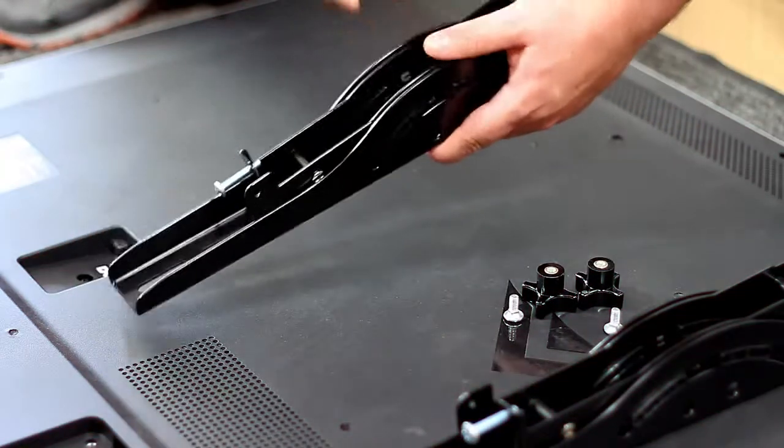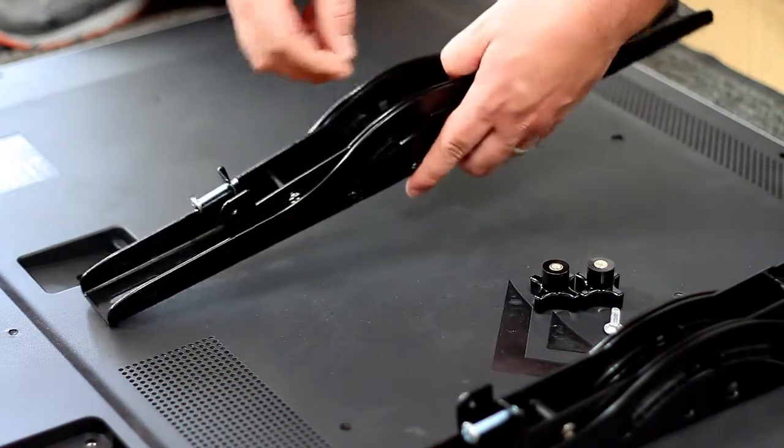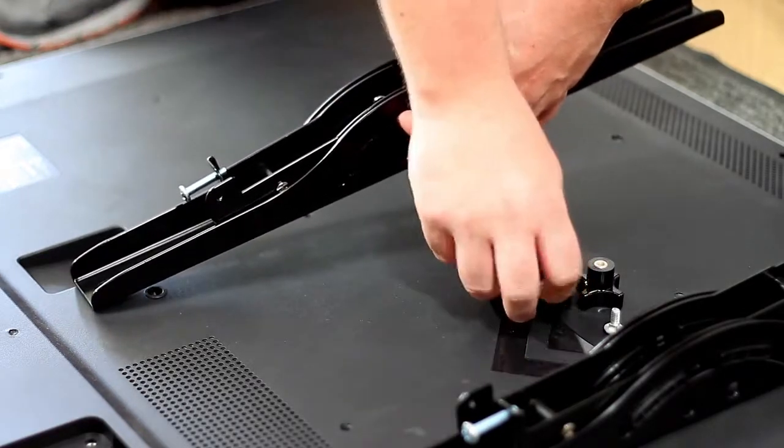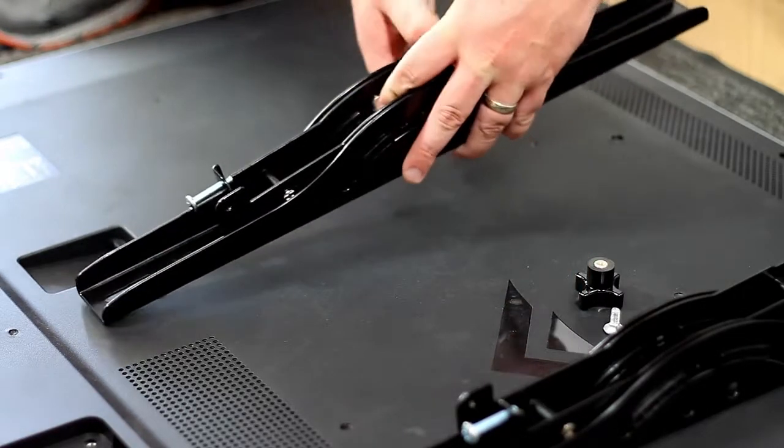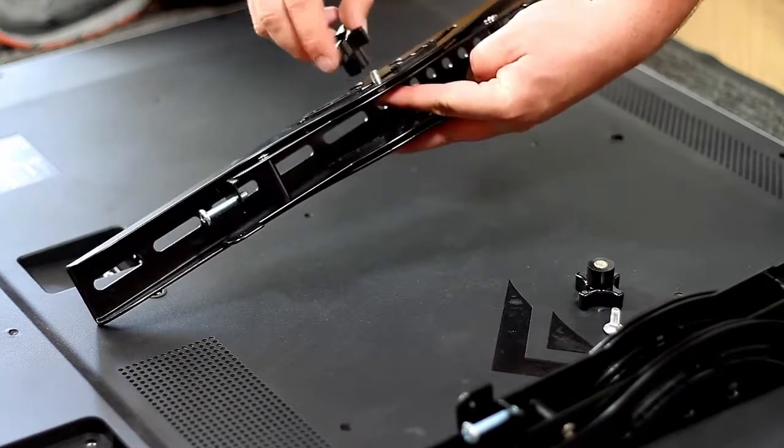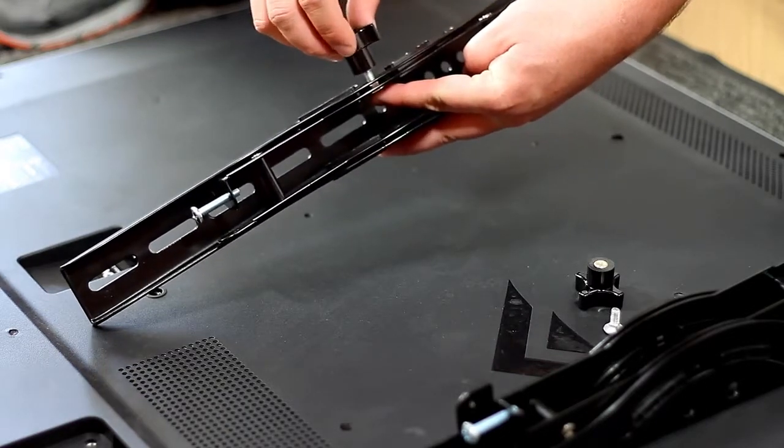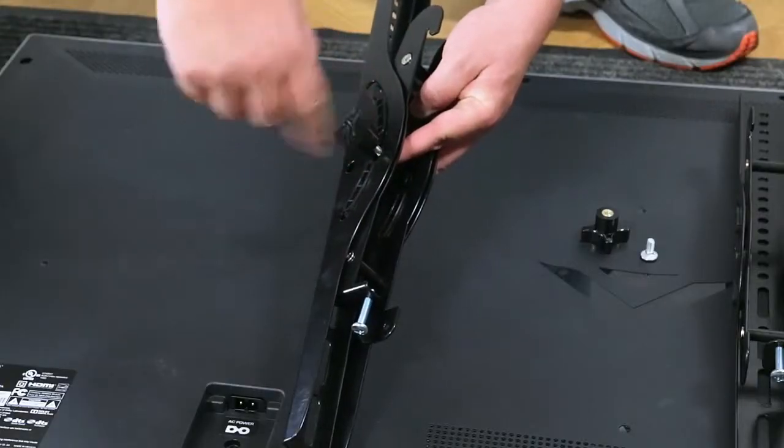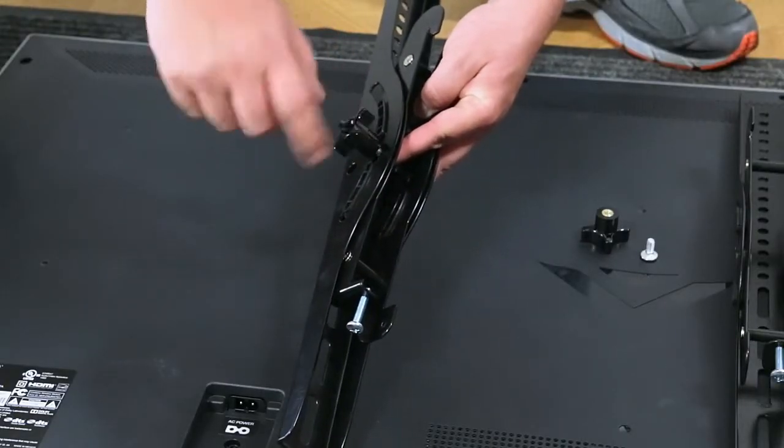Now the first step is to attach the mounting bracket arms to the rear of the television. Start by taking two of the carriage bolts and two of the tension knobs and mount them onto the arms. To do this, insert the carriage bolts into the rectangular opening halfway on the bracket. Take the tension knobs and hand-tighten onto the carriage bolt.